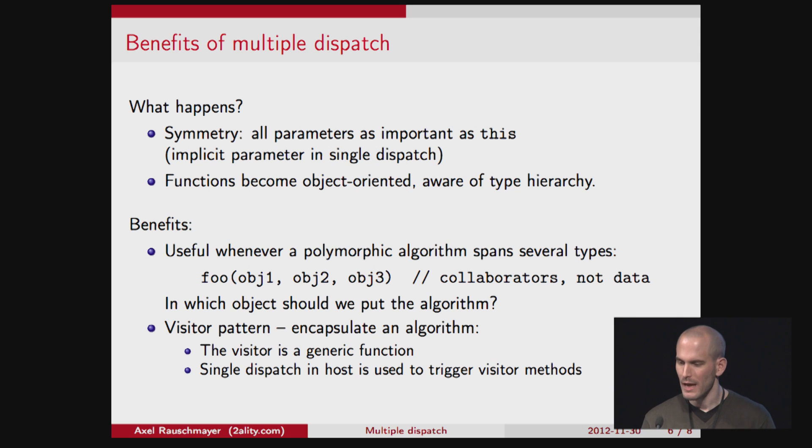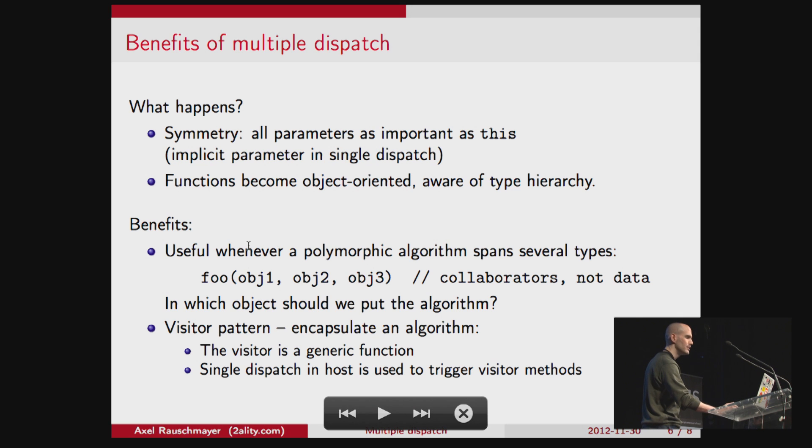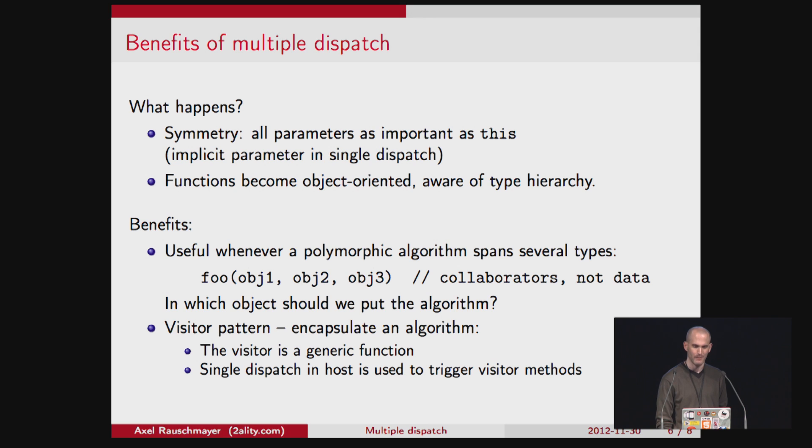The benefits are that whenever you have a polymorphic algorithm that applies to several objects, then you can put that into a generic function. And here you have the generic function foo. It works with three objects. And then it's obvious that foo doesn't belong to a single object. It belongs to all of those objects at the same time. So generic functions allow you to do that.